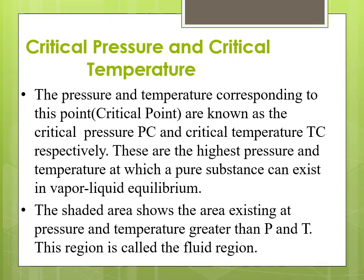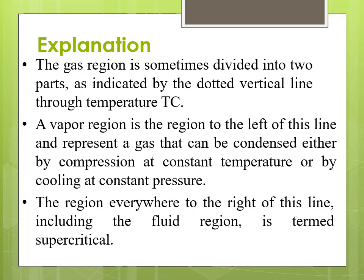What is critical pressure and critical temperature? The pressure and temperature corresponding to the critical point are known as the critical pressure and critical temperature. These are the highest pressure and temperature at which a pure substance can exist in vapor-liquid equilibrium. The red shaded part in the graph indicates the fluid region — that area exists at pressures and temperatures greater than the critical pressure and critical temperature, and this region is known as the fluid region.